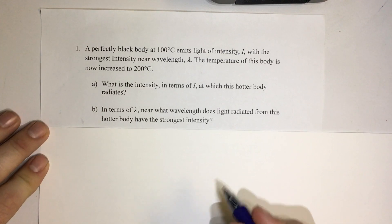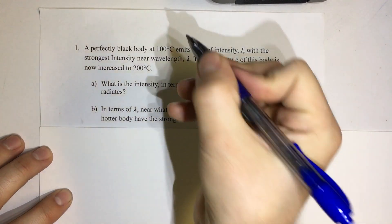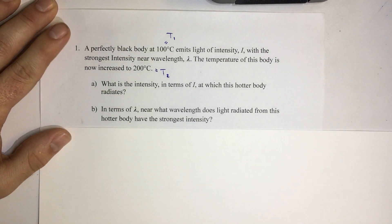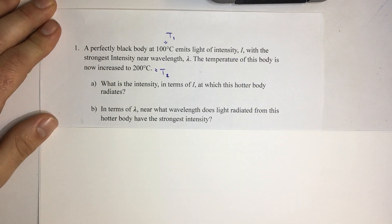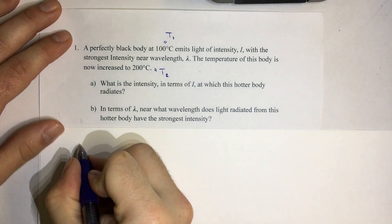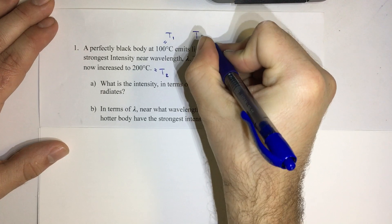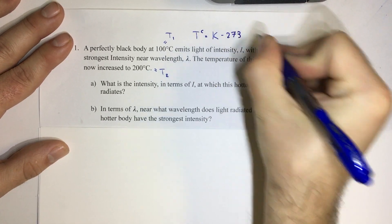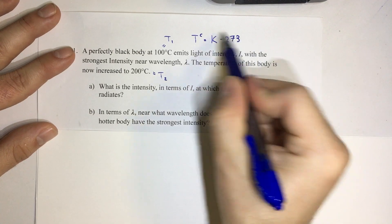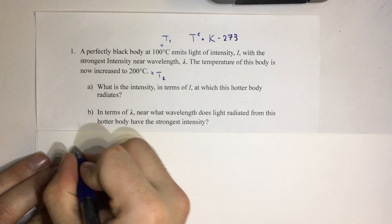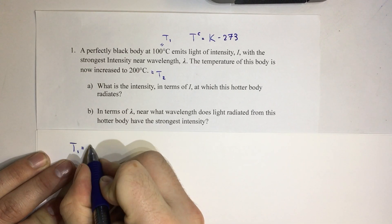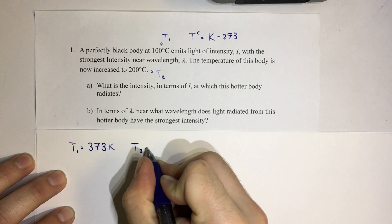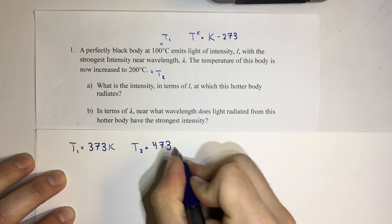Let's write down what we know first. We have our initial temperature T1 and our second temperature T2. But we are physicists, so when we deal with temperatures, we need to deal in the Kelvin scale. The conversion goes like this: temperature in Celsius equals temperature in Kelvin minus 273. So to get the temperature in Kelvin, we add 273 to the Celsius temperature. So T1 is going to equal 373 Kelvin, and T2 is going to equal 473 Kelvin.